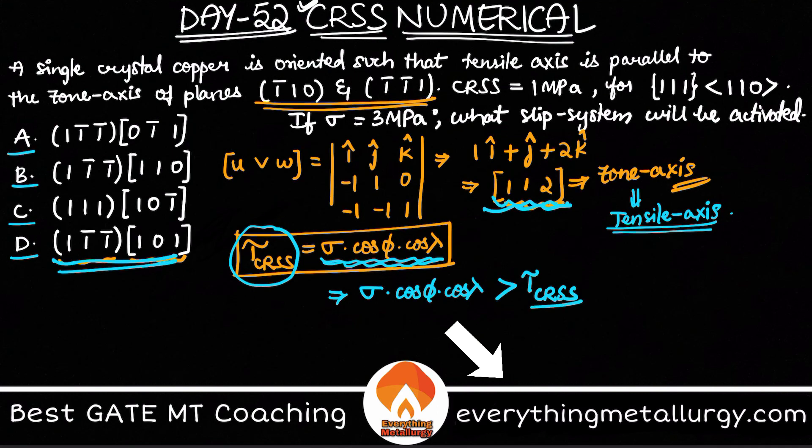We know sigma is 3 MPa and tau is 1 MPa. From here, you get a simple mathematical condition that cos φ into cos λ should be greater than 1 by 3.